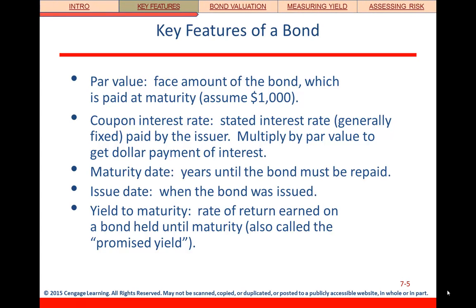Let's talk about the key features of a bond — these are important definitions you need to know. First, we have the par value or face value. That is the face amount of the bond that you will get back at maturity. Typically on a corporate bond, that's going to be one thousand dollars.